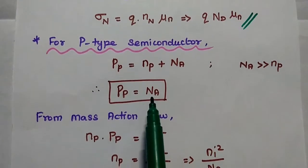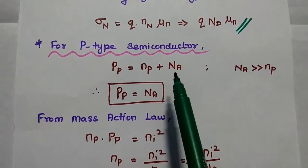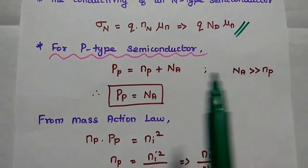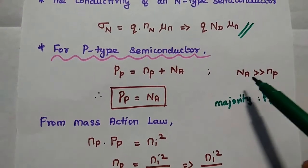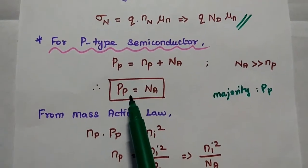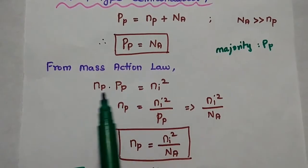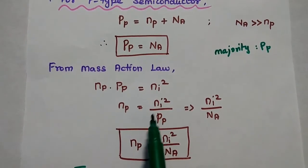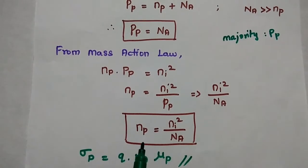The same way we can obtain p-type semiconductor. In p-type, the number of free holes is equal to the number of electrons plus the number of acceptor atoms. The number of acceptor atoms is far greater than electrons in p-type, because in p-type the majority carriers are holes and minority carriers are electrons. So we can simply neglect n-p. The number of free holes is equal to the number of acceptor atoms in p-type. From mass action law, n into p equals ni squared, we can get the concentration of electrons. The number of free holes can be replaced by the acceptor atoms, giving the formula for concentration of electrons in p-type semiconductor.